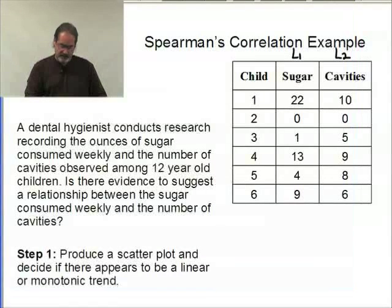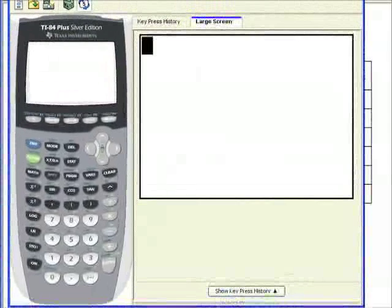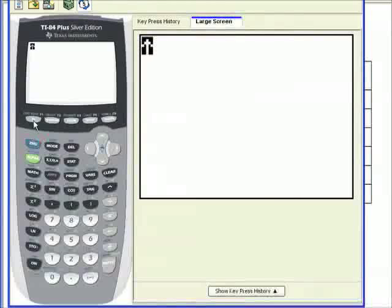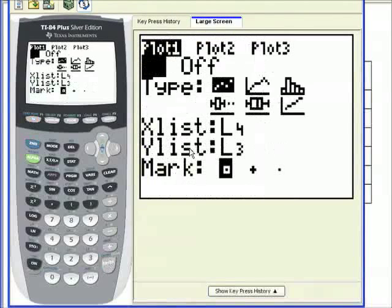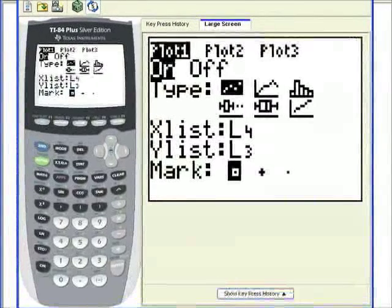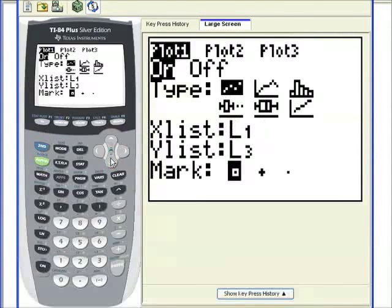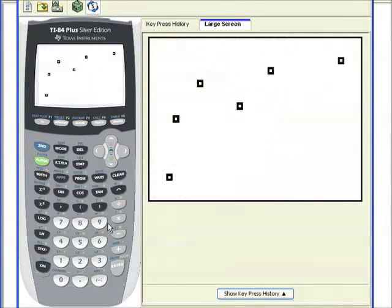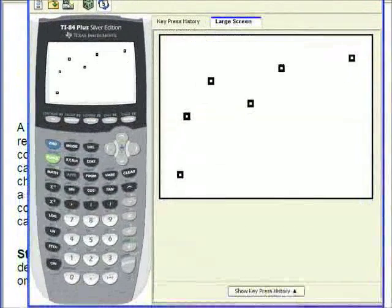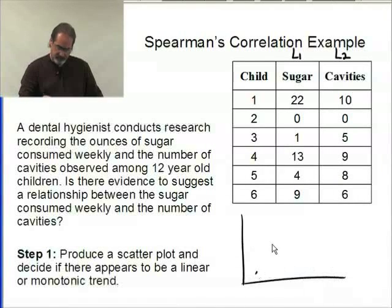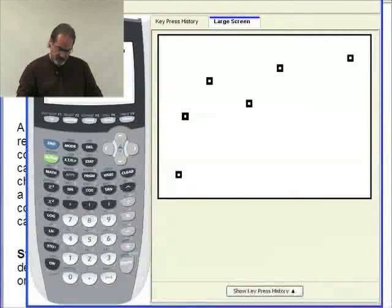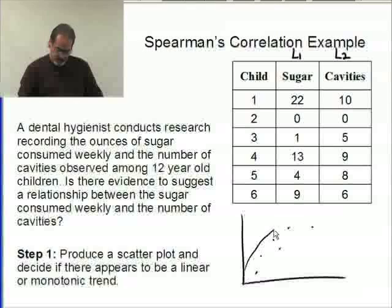So I'm going to go ahead and bring up my calculator and let's jump right straight to the scatter plot. Second stat plot, I use stat plot one. There's my scatter plot. I need L1 and then L2, and I will zoom 9. And what I'm seeing here is something with curvature to it. There's definitely a banana shape sort of thing going on here. So I'll go ahead and I will draw that real quickly on my page here. Basically my scatter plot is looking something like this sort of a thing. And what I'm seeing is curvature.